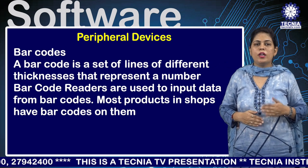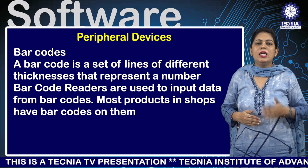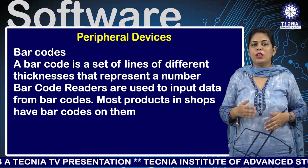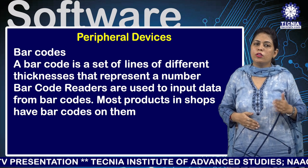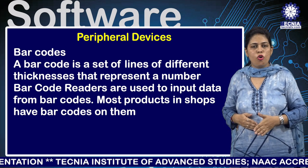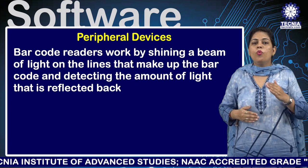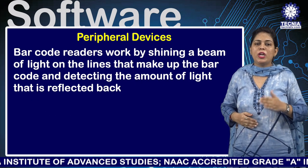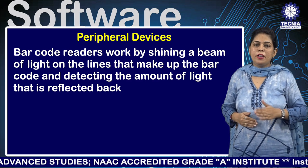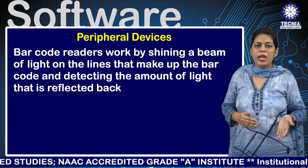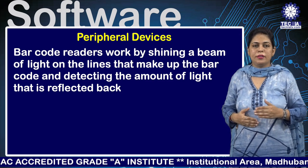A barcode is a set of lines of different thickness that represent numbers. Barcode readers are used to input data from barcodes; most products in shops have barcodes on them. Barcode readers work by shining a beam of light on the lines that make up the barcode and detecting the amount of light reflected back.